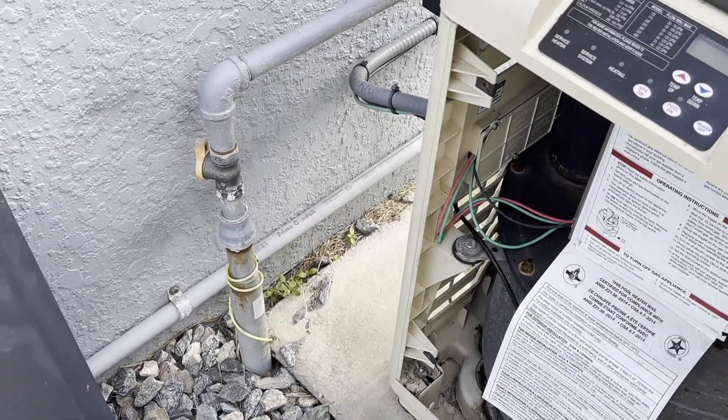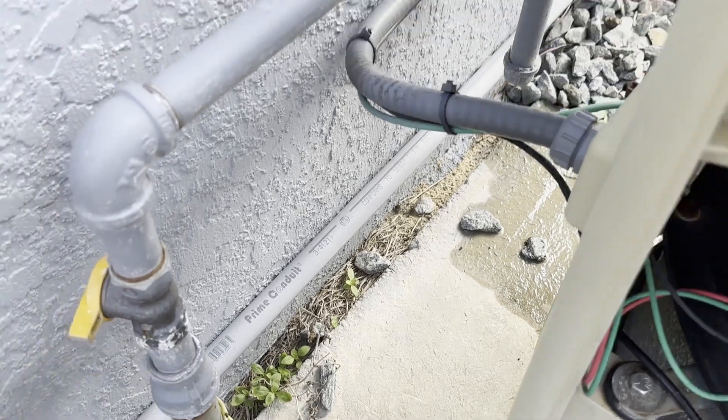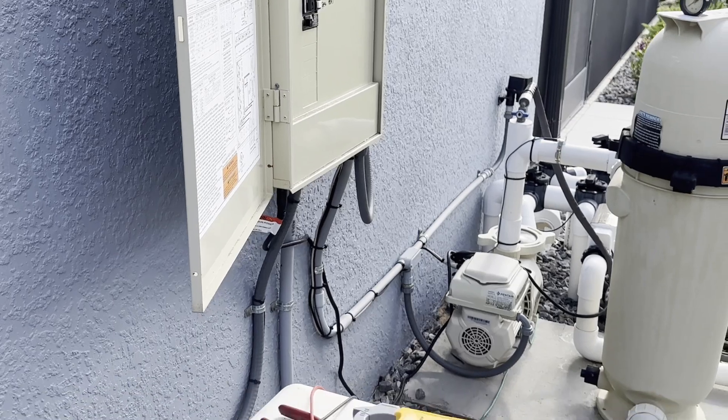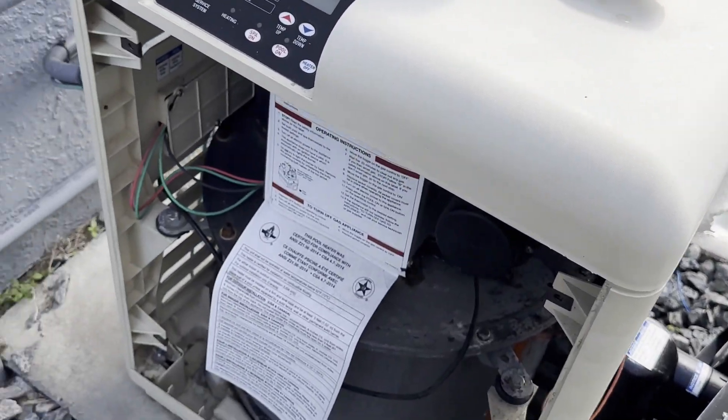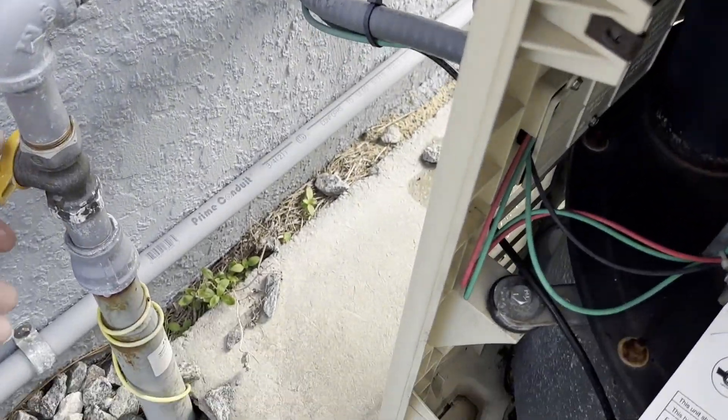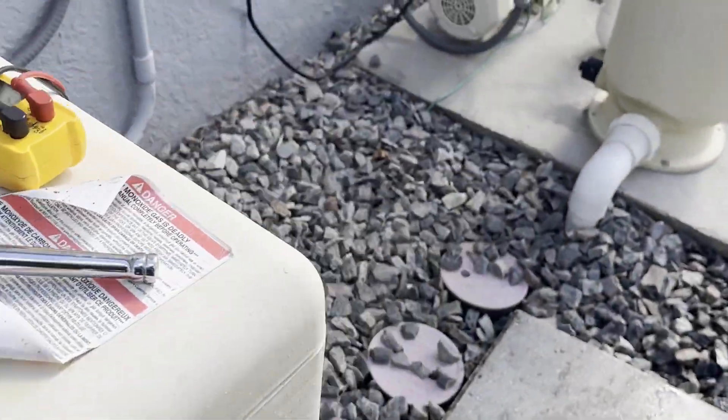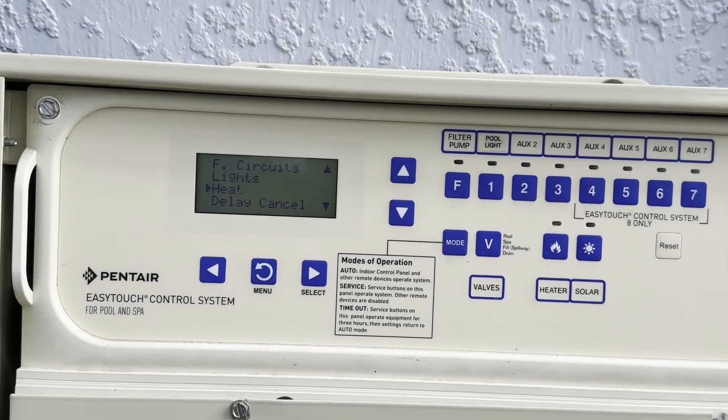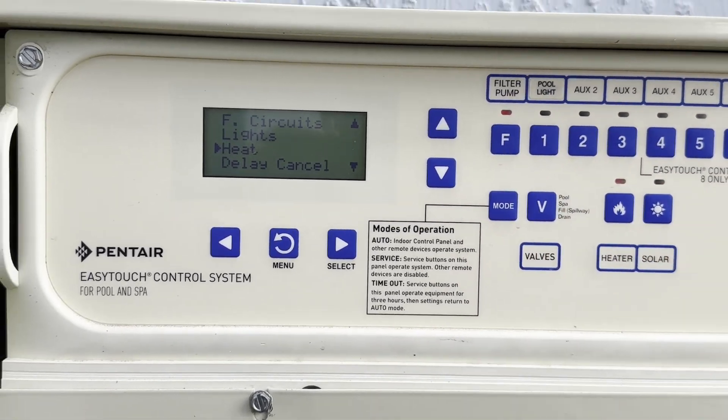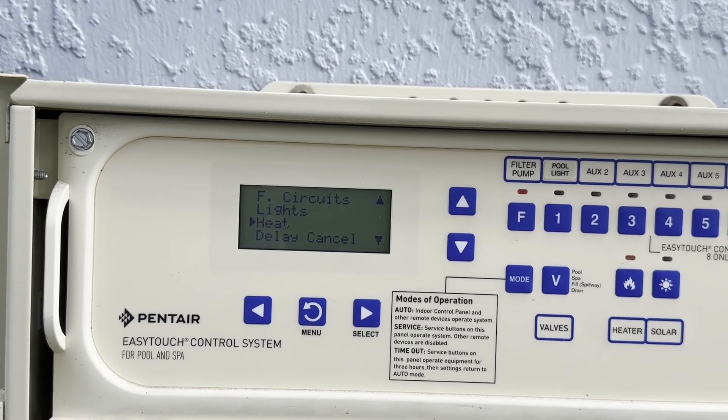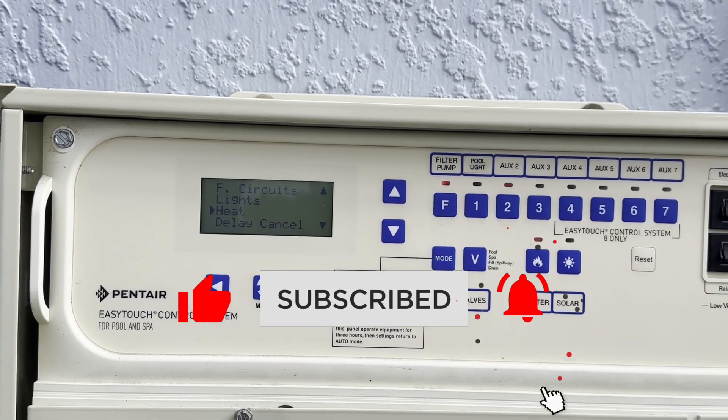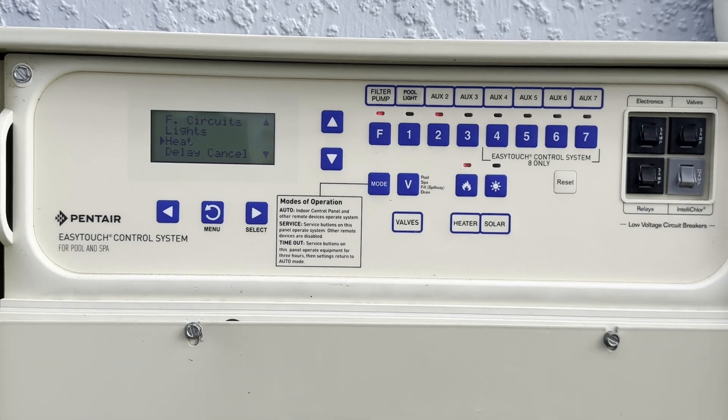So before we remove the sensor, you want to turn the gas off and you want to turn the pump off. So make sure that there's no water flowing through it. You will get some water coming out when you remove the gas sensor, but it shouldn't be that much. We go back and we will turn our gas back on and we will go to our pump and we'll turn our pump back on. And there goes the pump.